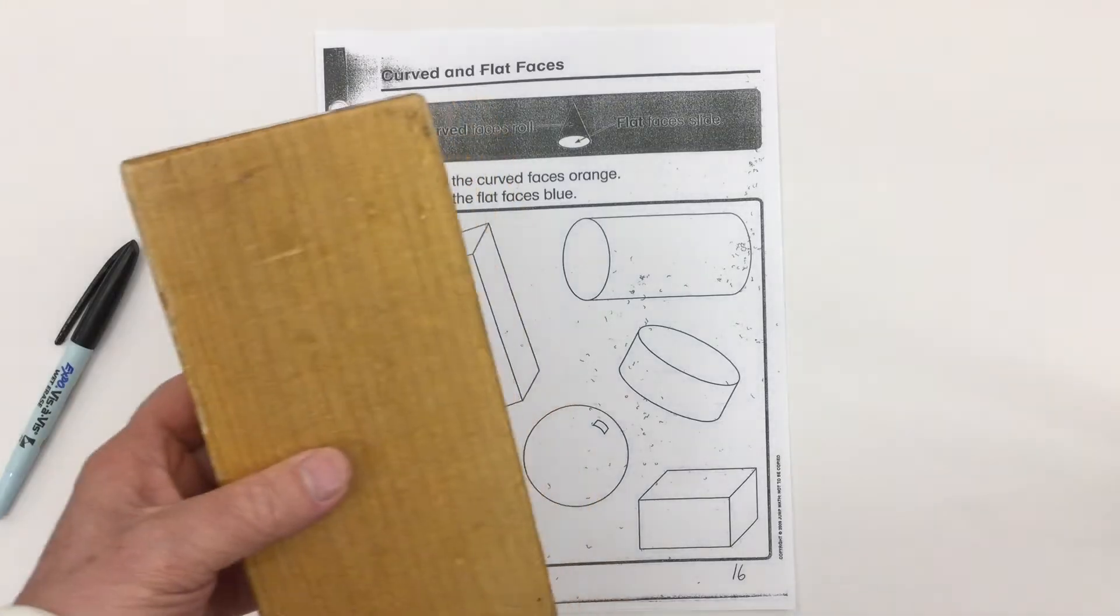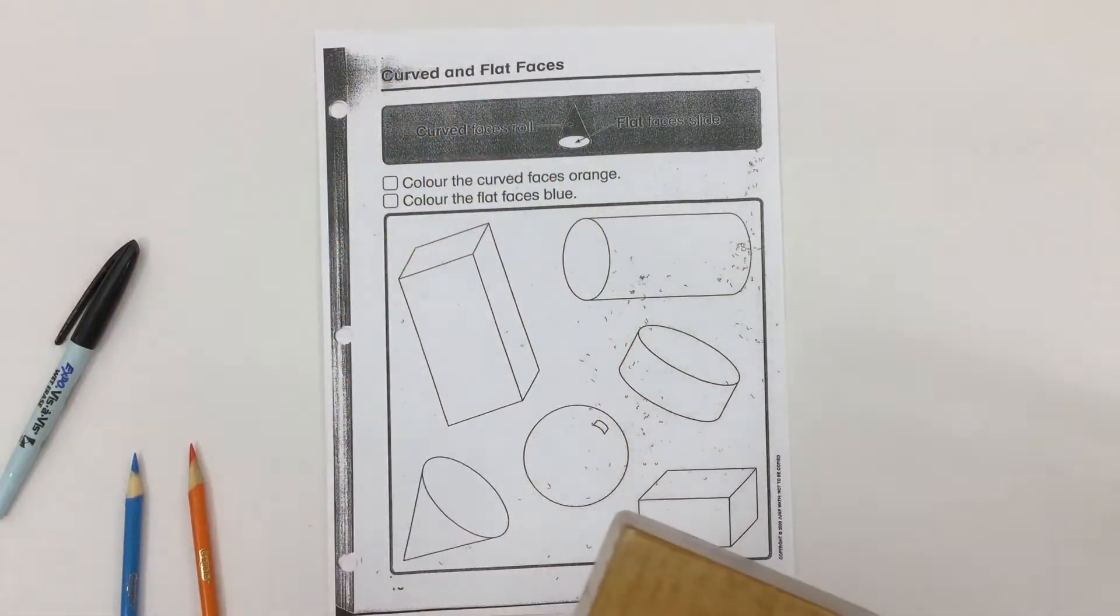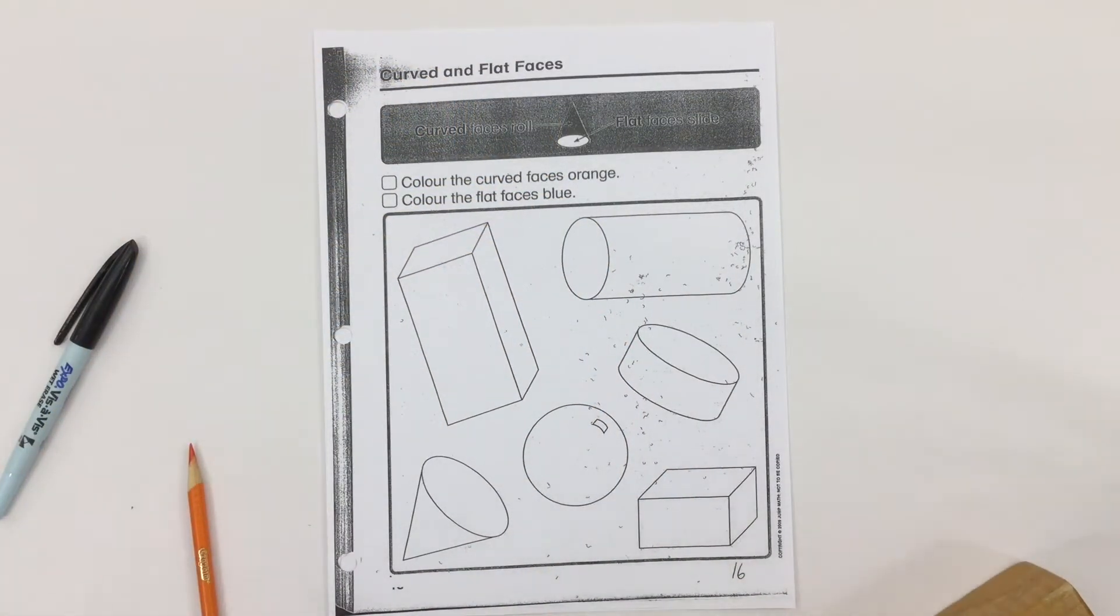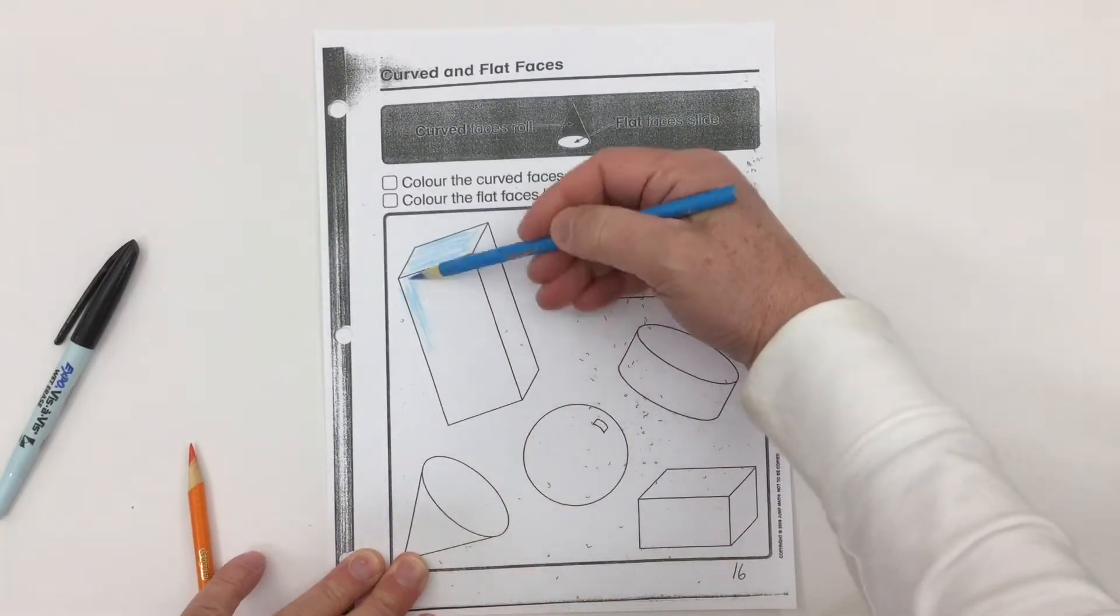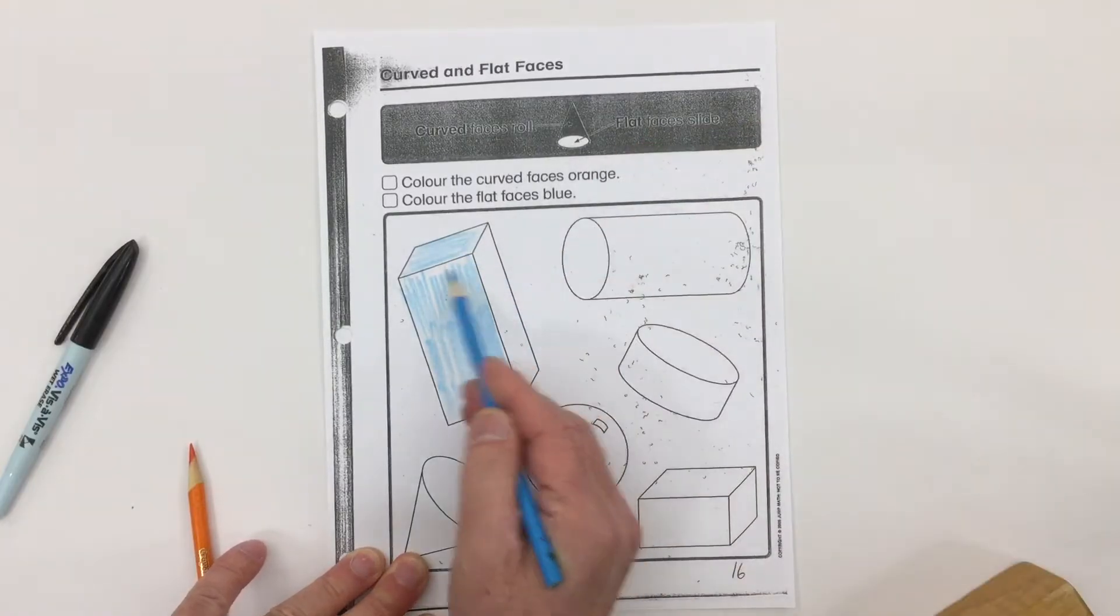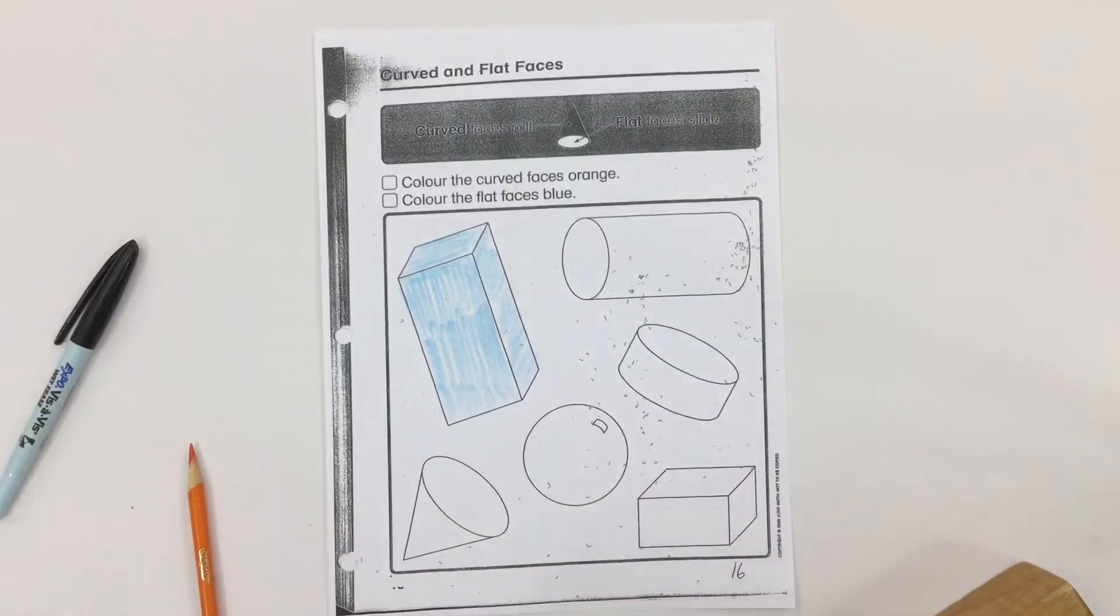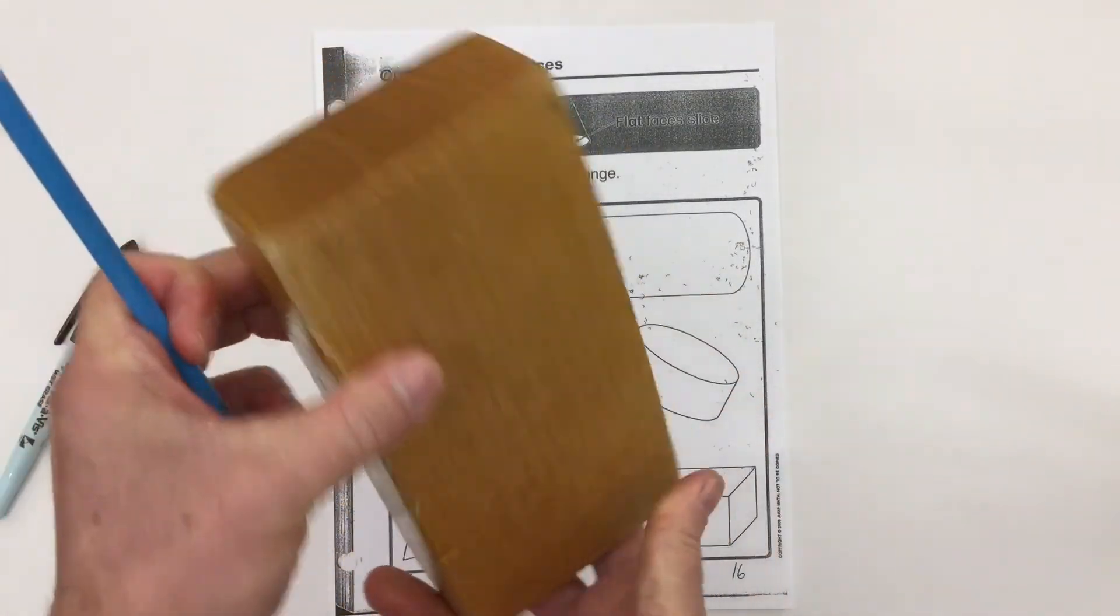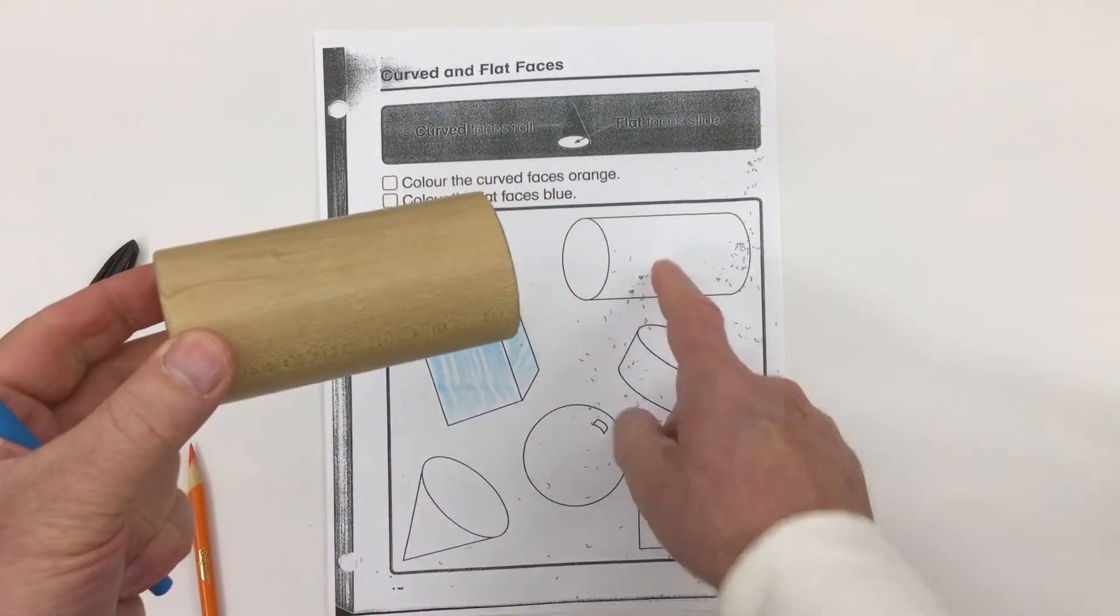Here we have this first shape. We can see it's flat, so flat faces are going to get colored blue. All of the faces on that shape are flat. Here we have a cylinder. We look on this cylinder, it's got curved faces but it's also got flat faces.